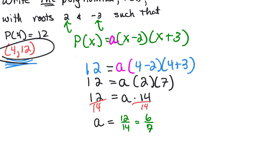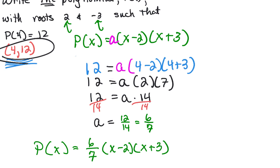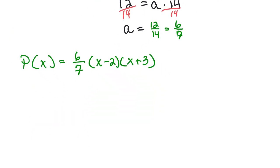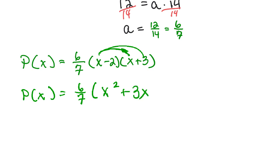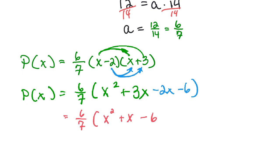The full answer is p(x) equals 6/7 times x minus 2 times x plus 3. Multiplying out: x times x is x squared, x times 3 is 3x, negative 2 times x is negative 2x, negative 2 times 3 is negative 6. Combining like terms gives x squared plus x minus 6. Whether you distribute the 6/7 depends on the problem — it's often easier to keep it factored.